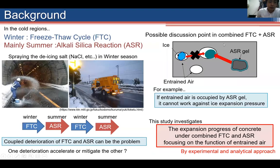In cold regions with much snow, concrete structures suffer from freezing-thawing cycles (FTC) in winter season. And due to de-icing salt spread in winter season, alkali-silica reaction (ASR) can be accelerated in summer season. So in this kind of structures, coupled deterioration of FTC and ASR can be a problem. The question is whether one deterioration can accelerate or mitigate the other.